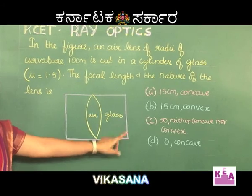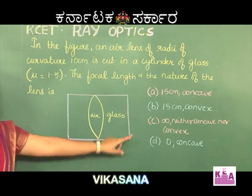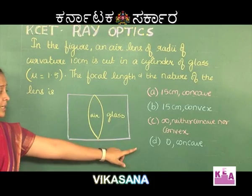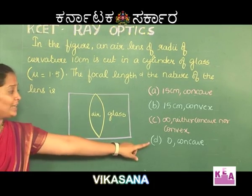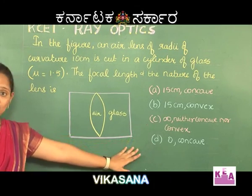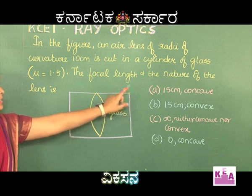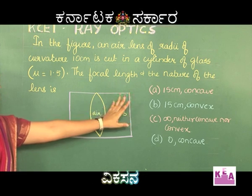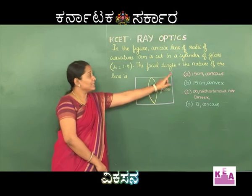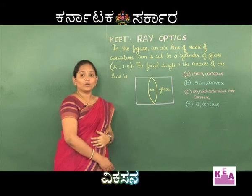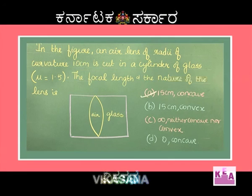The focal length cannot be 0, so option D is ruled out. Therefore, option A is correct: 15 cm and concave. The correct answer for this question is option A.